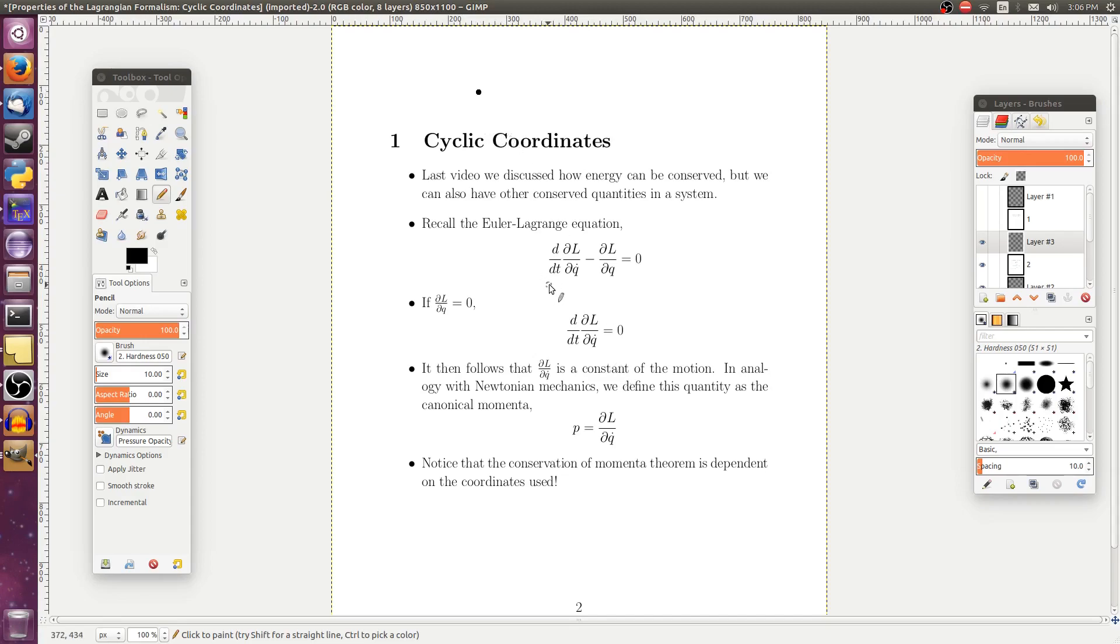So if we just write out the Euler-Lagrange equation, which we have right here, then if we had the case where ∂L/∂Q was equal to zero, we would just be led to this equation.